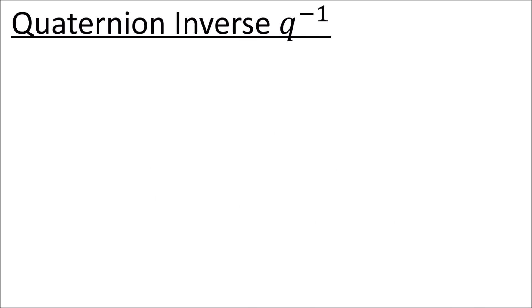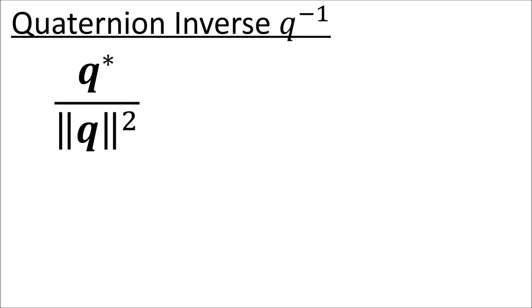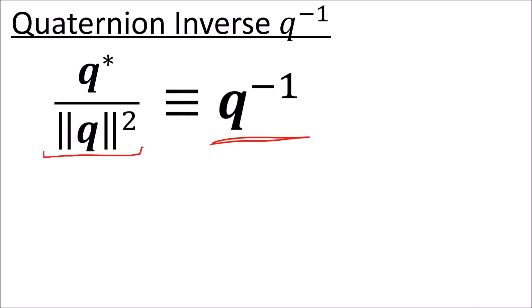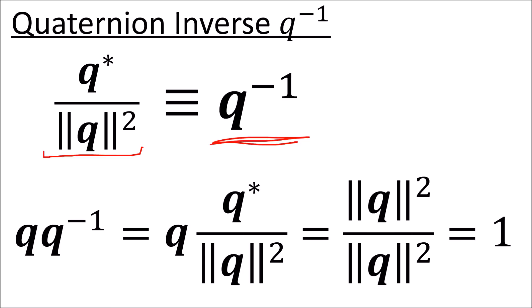We say that q* over the squared length of q is the inverse of q, denoted q to the negative 1. This is because q times q inverse gives us 1.